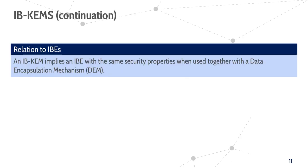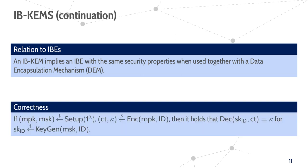As common for key encapsulation mechanisms, an IBCAM can be used to generically construct a fully-fledged IBE when used in conjunction with a data encapsulation mechanism, or DEM, which could for example be instantiated with a symmetric encryption scheme. In terms of properties, we want correctness: if Alice encapsulates a secret key to Bob, then Bob always gets back the same secret key by decapsulating — but only if he has a correct secret key from the trusted authority, and both share the master public key.